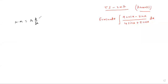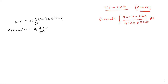Numerator is equal to a into d/dx of denominator plus b into denominator. So: 9cosx minus sinx is equal to a into d/dx of (4sinx plus 5cosx) plus b into (4sinx plus 5cosx).